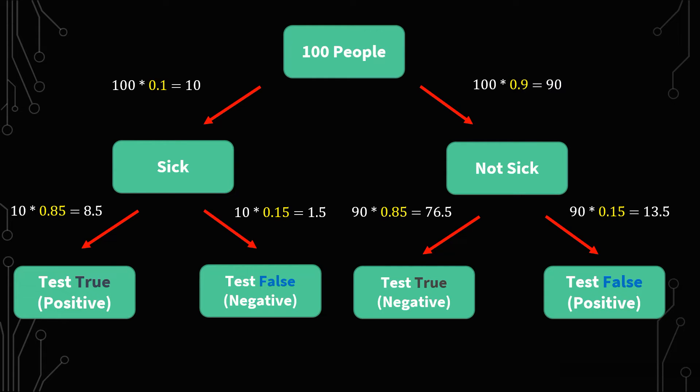Now, if we go to the other side to not sick, we have 90 times 0.85, the accurate rate, to give us 76.5. So 76.5 test truly negative. So the test is saying they are in fact not sick, as well as in reality, they are not sick. The other side is 90 times 0.15 to give us 13.5 people of the 90 that have a false positive rate.